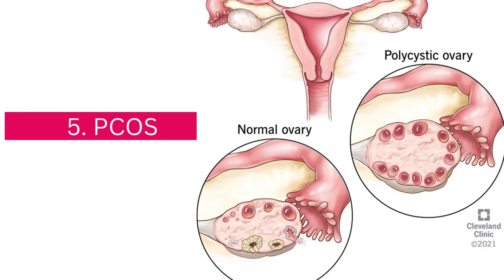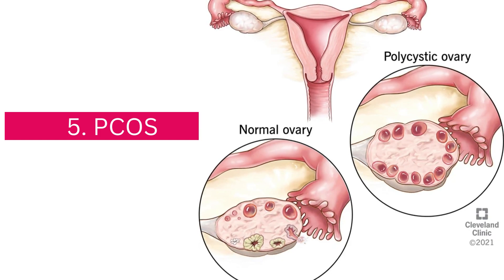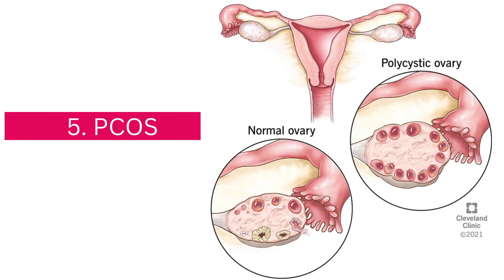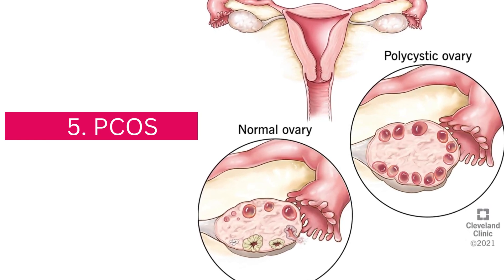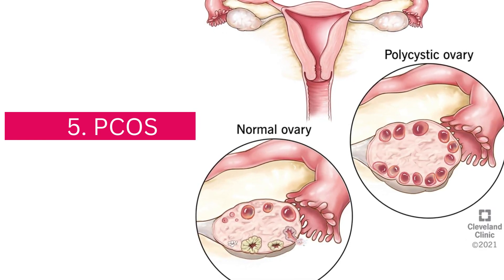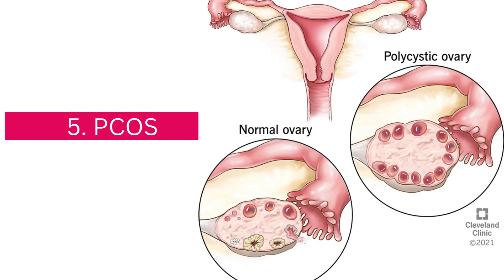Number five: PCOS — polycystic ovarian syndrome. It's very common among women in their reproductive years. Women with PCOS have very high levels of male hormones, causing small fluid-filled cysts containing immature eggs to appear along the outer edge of the ovary. Women do produce male hormones in small amounts normally. This causes the egg follicles to remain small and not mature for ovulation, so women with PCOS may find it difficult to ovulate.